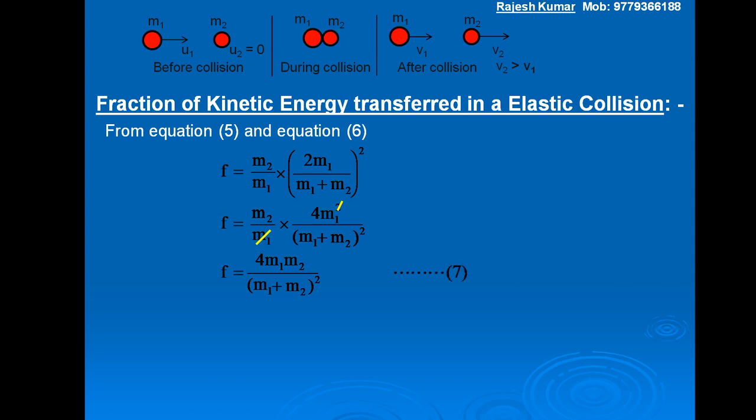This equation shows that F does not depend upon the velocities of the colliding objects before collision — it only depends upon the masses of the colliding objects.